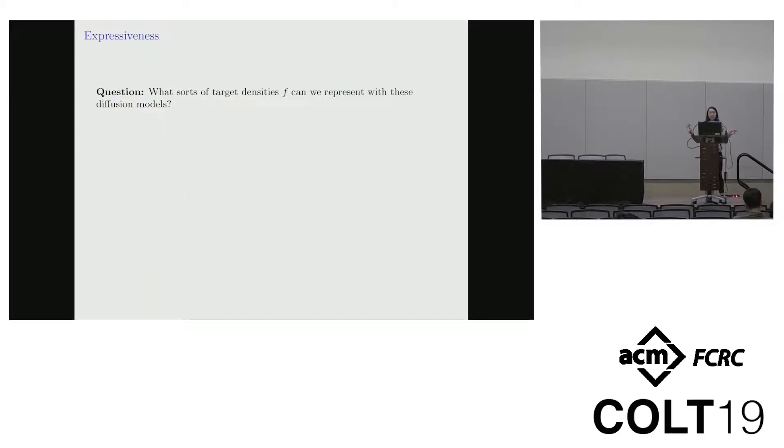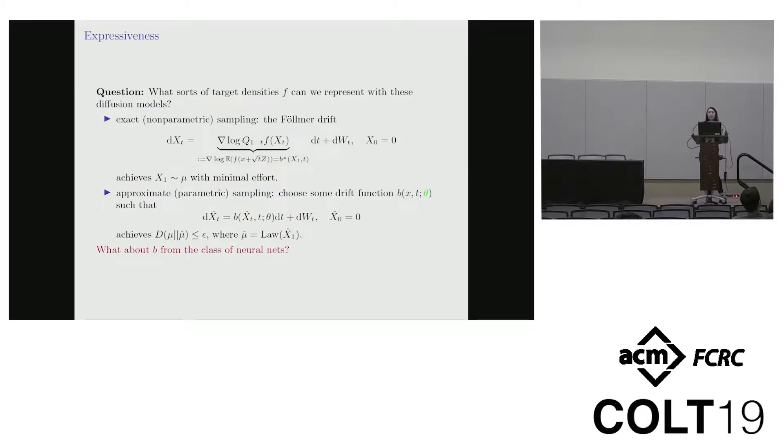Okay so now I've hopefully convinced you that you can do sampling and efficient inference with these sorts of models. You should probably verify that they are actually sufficiently expressive, meaning that they can by time one, say produce some target density that is as rich as anything you can hope to achieve with the neural net.